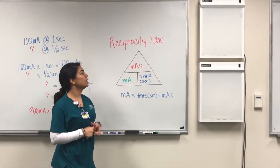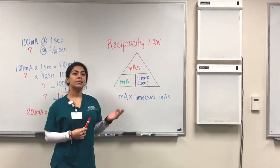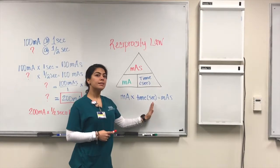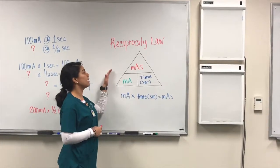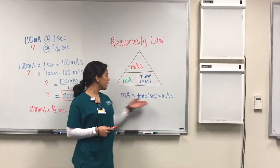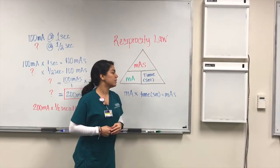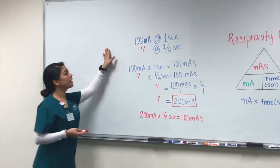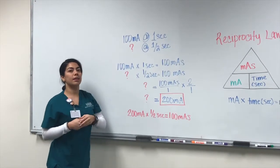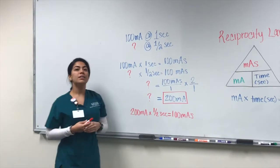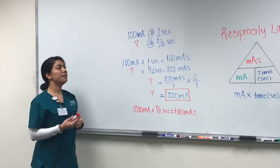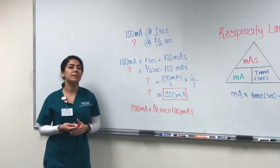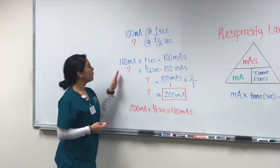The next law is the reciprocity law. This law states that any density produced on a radiograph can use any combination of mA and time, as long as the product is equal to the mAs. The formula is: mA times time equals mAs. For example, a radiographer takes an initial radiograph using 100 mA at one second, but there is involuntary motion and he wants to maintain the same density.